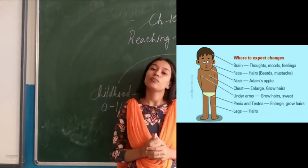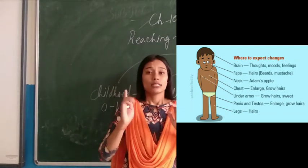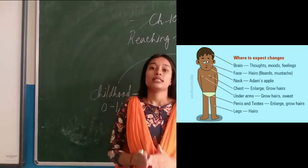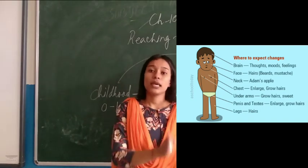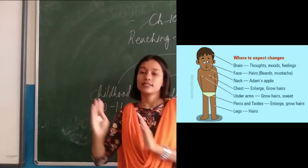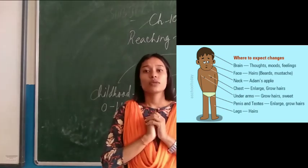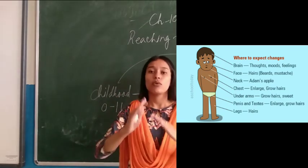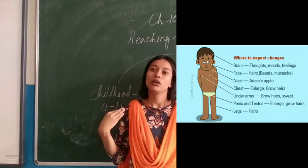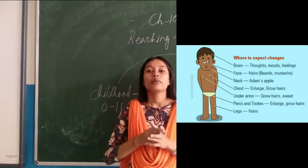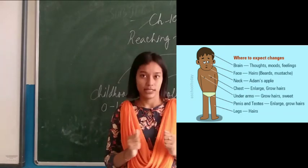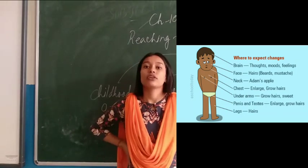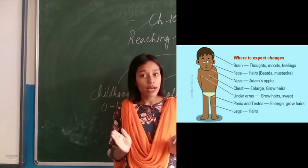The next change is changing body shape. When you enter the age of puberty, the changes that take place in a male and in a female are totally different. In boys, the shoulders become broad and the chest becomes wide. On the other hand, in girls, the region below the waist will become wider.